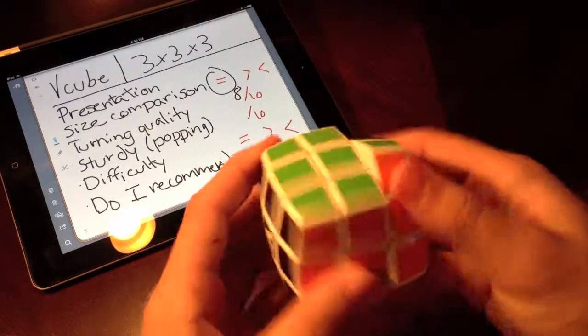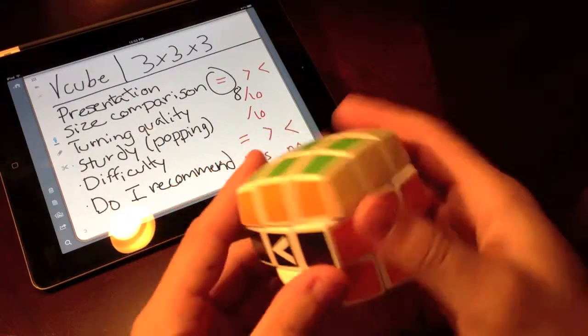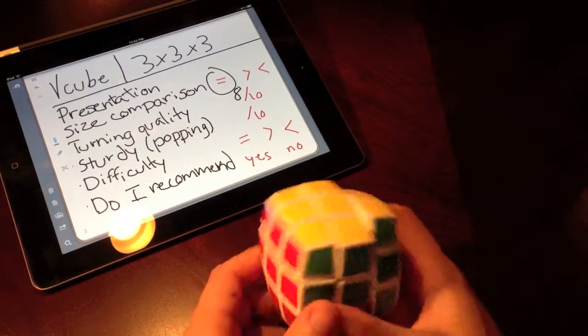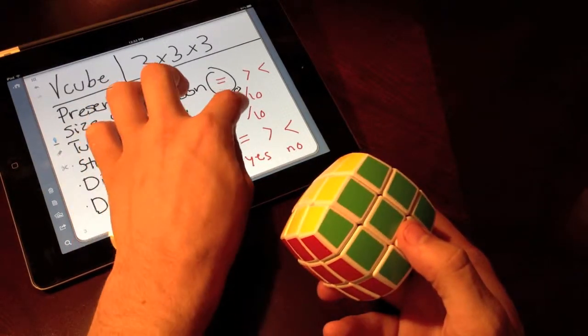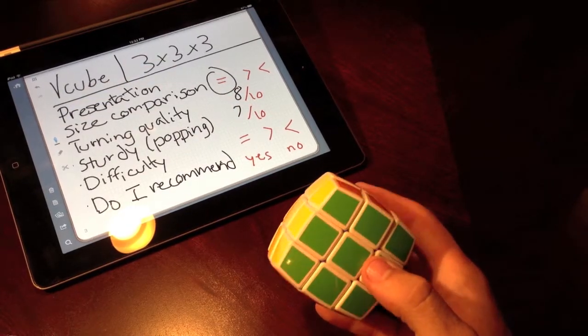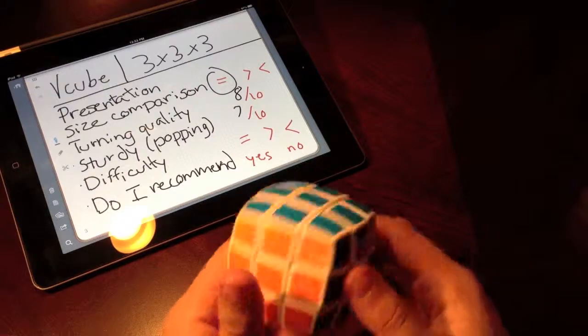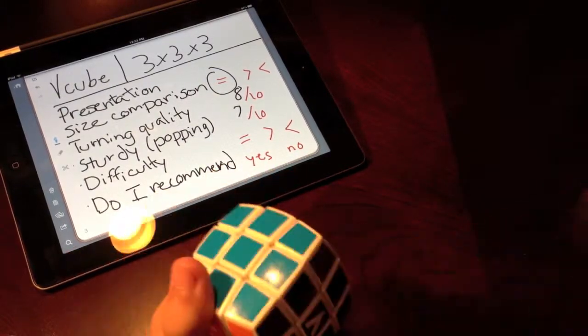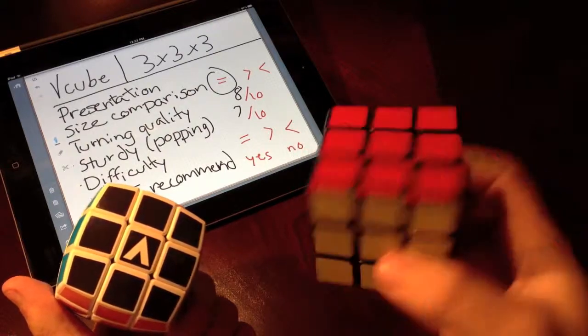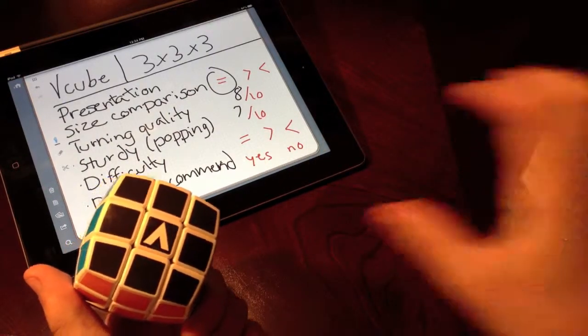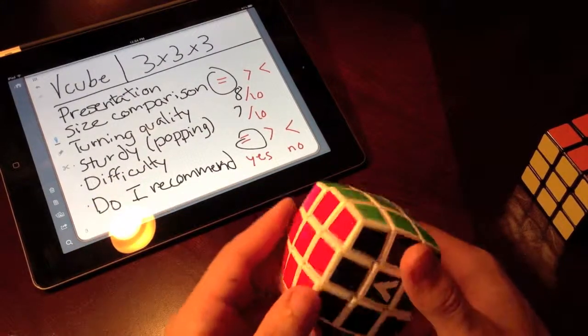I don't think corners or any other kind of pieces will be popping out, so that's once again pretty good. I'm really impressed with this cube. Let's give it 7 out of 10. And what about difficulty? Well, obviously it's a 3 by 3 by 3, it's nothing more than that. So difficulty is the same exact thing as a 3 by 3.